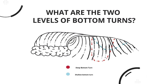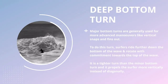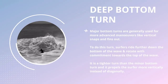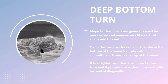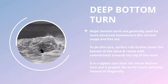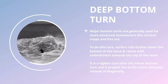What are the two levels of bottom turns that we're going to look at today? First up we've got a deep bottom turn. This is when the surfer rides further down towards the bottom of the wave and rotates with commitment towards the top of the wave. It is a tighter turn than the minor bottom turn and it propels the surfer more vertically instead of diagonally.